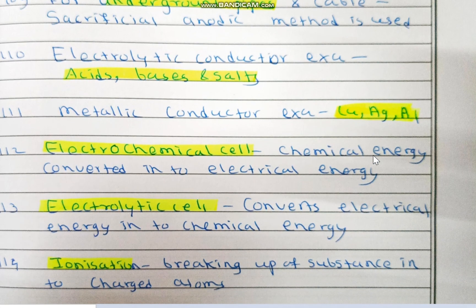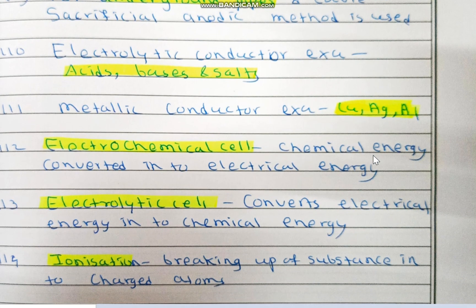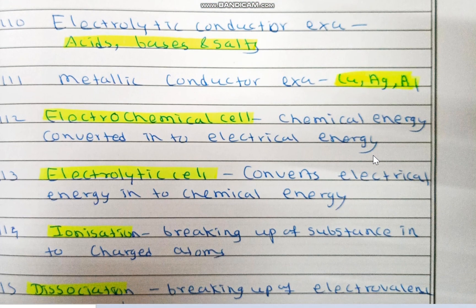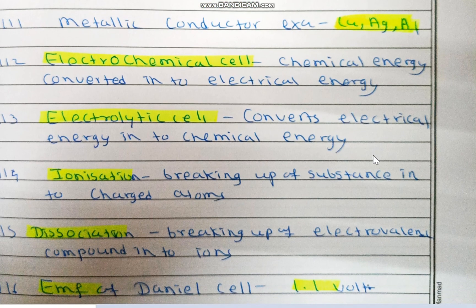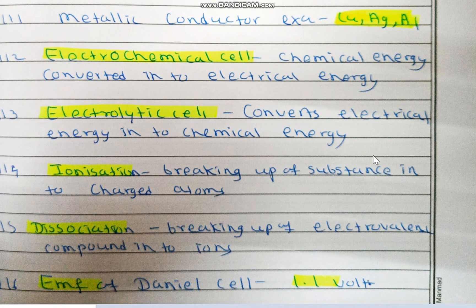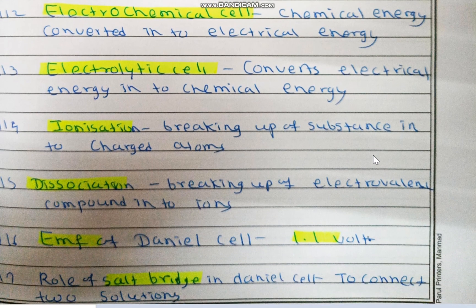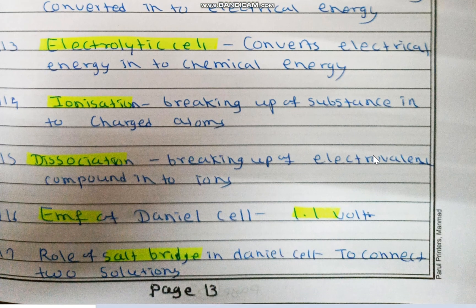Electrolytic conductors include acids, bases, and salts. Metallic conductors include copper, silver, and aluminium. In an electrochemical cell, chemical energy is converted into electrical energy, while in an electrolytic cell, electrical energy is converted into chemical energy. Ionization is the breaking up of a substance into charged atoms. Dissociation is the breaking up of a substance into an electrovalent compound. The EMF of the cell is 1.2.